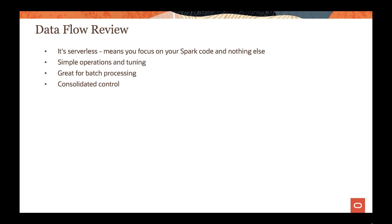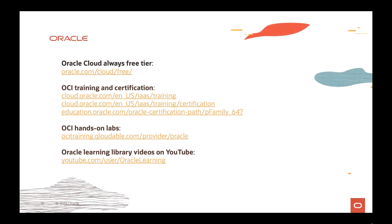Let's do a review of what we covered. OCI Data Flow is a serverless system, meaning you can focus on your Spark code and nothing else. It provides simple operations and tuning, is great for batch processing, gives you consolidated control, and provides a Spark UI to manage logs and run status of jobs. You can access Oracle Cloud's free tier using the provided link, take trainings and certifications, use OCI hands-on labs for step-by-step guidance, and this video is also available on the OCI Learning Library YouTube channel.